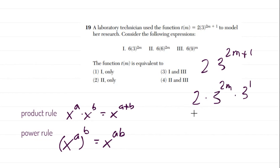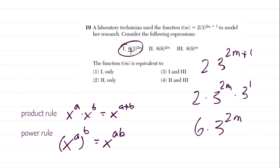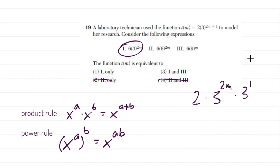We can combine the 2 and the 3 — that's 2 times 3, and we can multiply in any order. That gives us 6 times 3 to the 2m, which matches numeral one. Any answer choice that does not include numeral one can be eliminated, so we've already cut our answer choices in half.